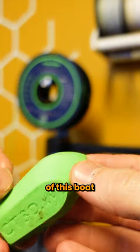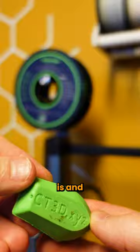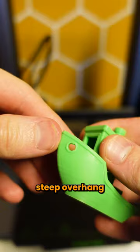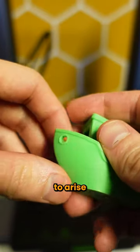The lettering on the bottom of this boat tells you how good your first layer is, and the license plate alerts you to any ghosting effects. The bow was designed with a steep overhang where any cooling issues will arise.